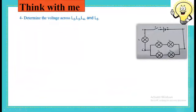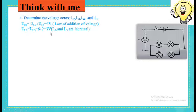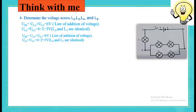Now determine the voltage across lamps L2, L3, L4, and L5. UBI equals 6 volts. In the upper branch, two identical lamps are in series — by the law of additive voltage, their voltages sum to 6 volts, so each lamp takes 3 volts. In the lower branch, the same principle applies: two identical lamps in series share the 6 volts equally, so each one also takes 3 volts.